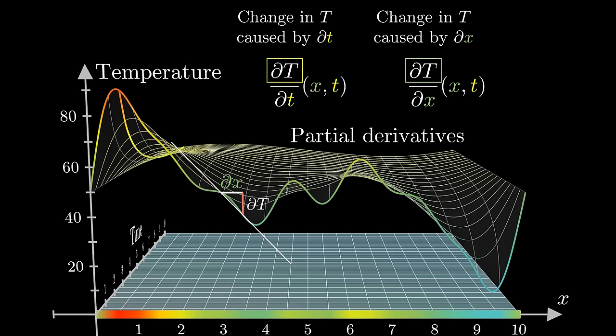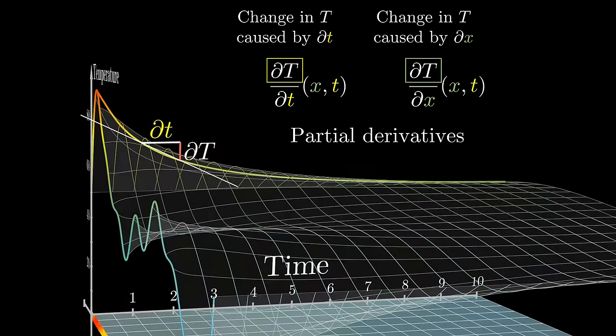To reiterate a point I made in the calculus series, I do think it's healthy to initially read derivatives like this as a literal ratio between a small change to the function's output, and the small change to the input that caused it. Just keep in mind that what this notation is meant to encode is the limit of that ratio for smaller and smaller nudges to the input, rather than a specific value of the ratio for a finitely small nudge. This goes for partial derivatives just as much as it does for ordinary derivatives.